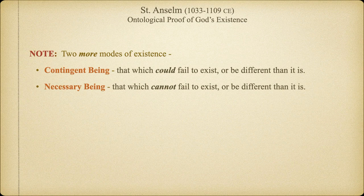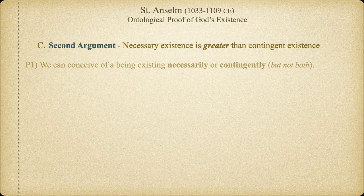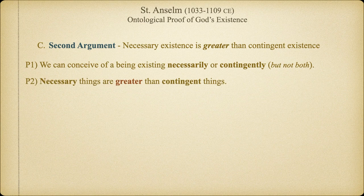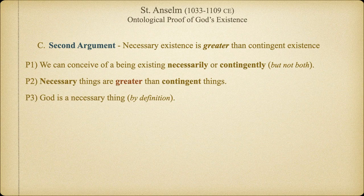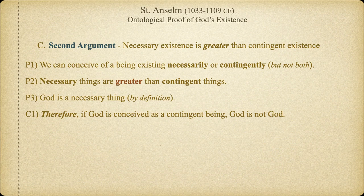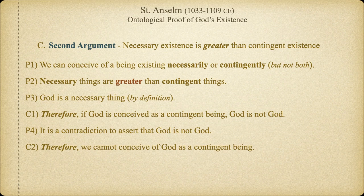With this distinction between necessary and contingency firmly in mind, we can put the second half of Anselm's argument into standard form. Premise one: We can conceive of a being existing necessarily or contingently, but not both at the same time. Premise two: Necessary things are greater than contingent things. Premise three: God is a necessary thing by definition as the greatest conceivable being. Therefore, if God is conceived of as a contingent being, then God would not be God. But of course it's a contradiction to assert that God isn't God. Therefore, we can't even conceive of God as a contingent being, and therefore God, the necessary being, must exist.